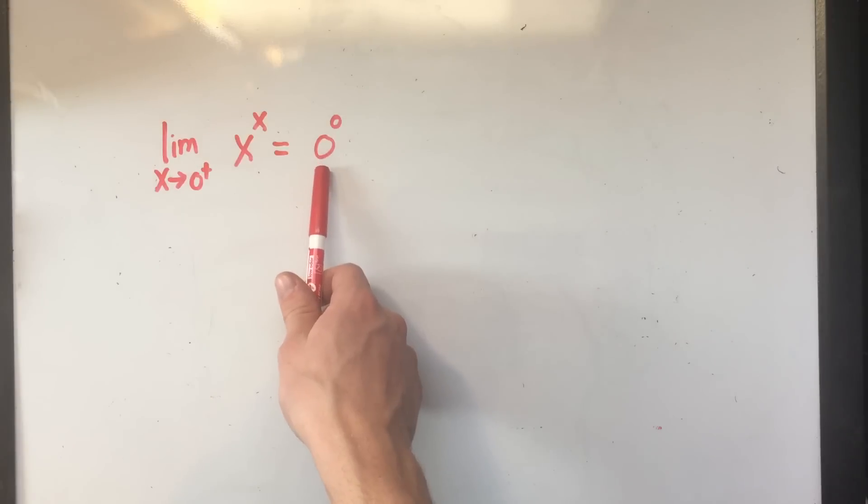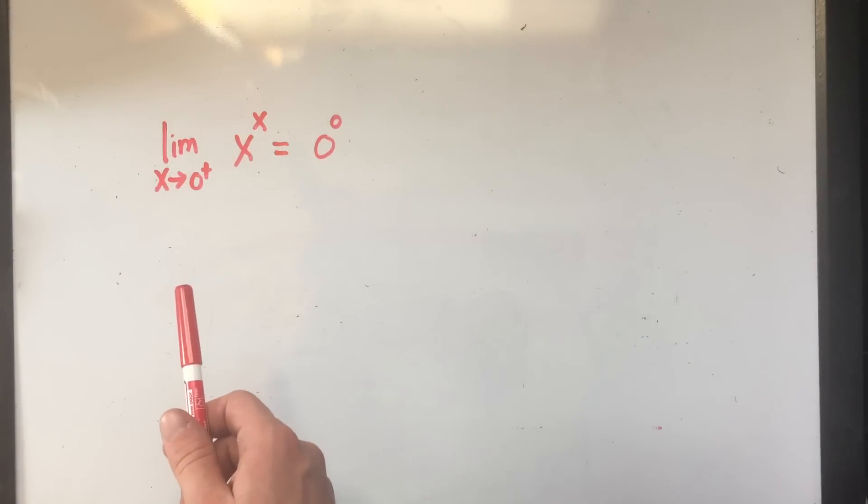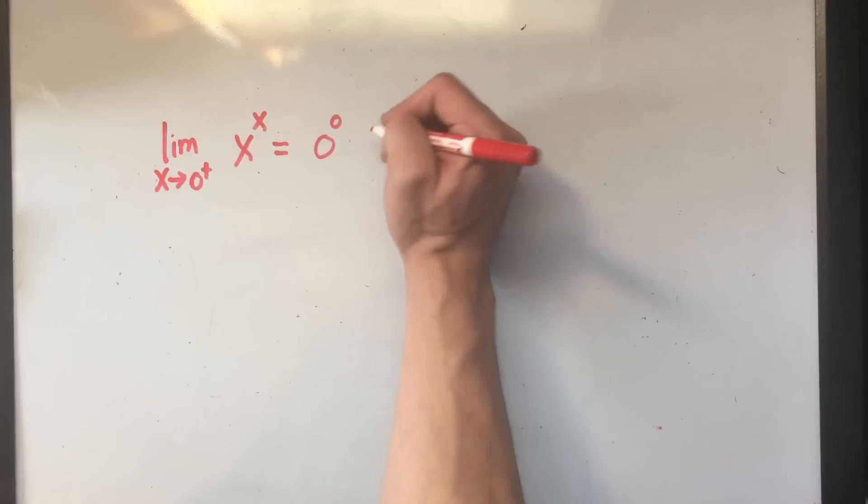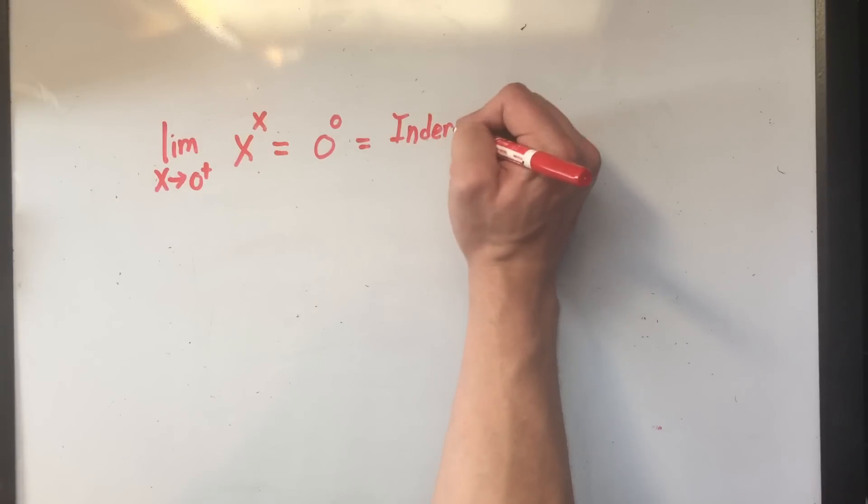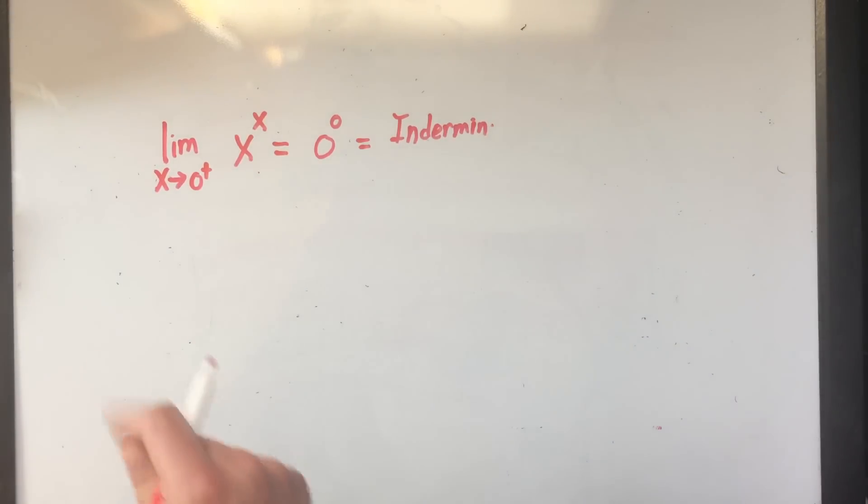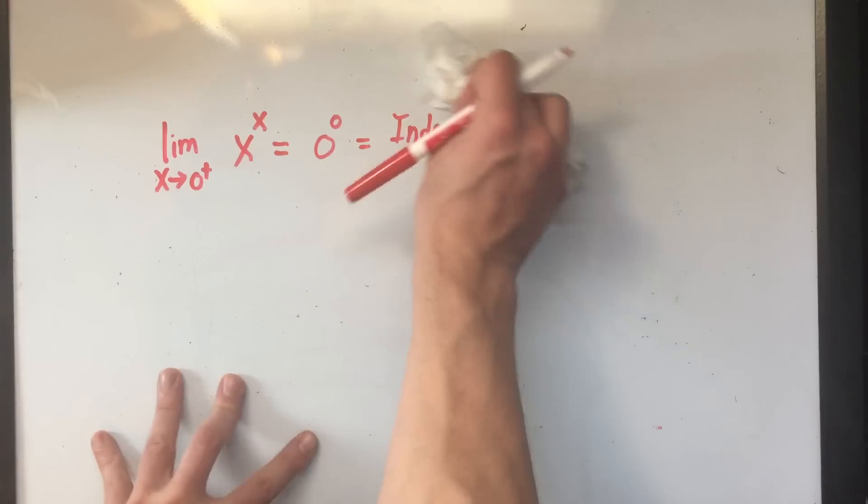Or you could think anything to the zero power is one. Hmm. Well, actually, zero to the zero is what we call an indeterminate form. So we have to do something else.